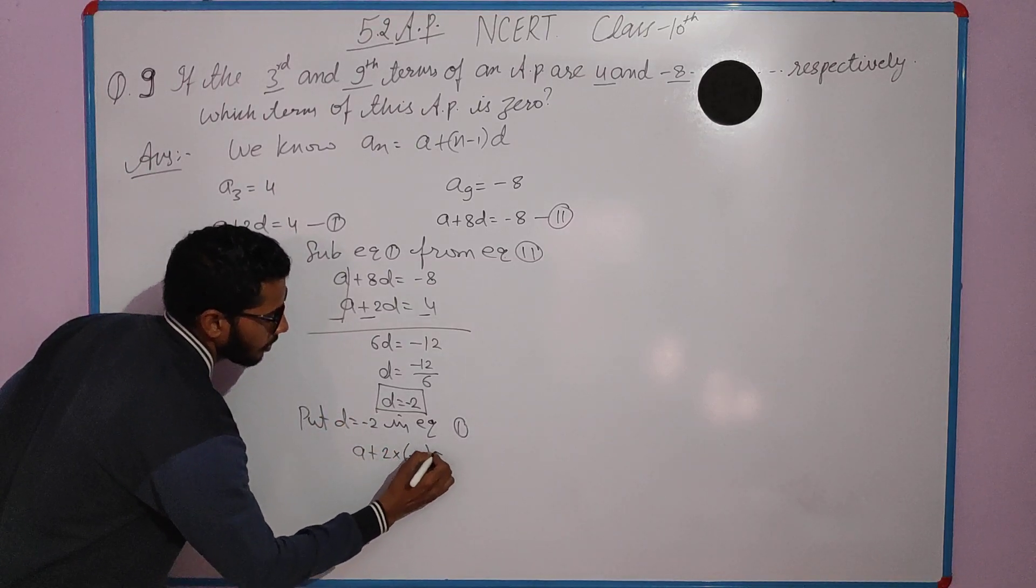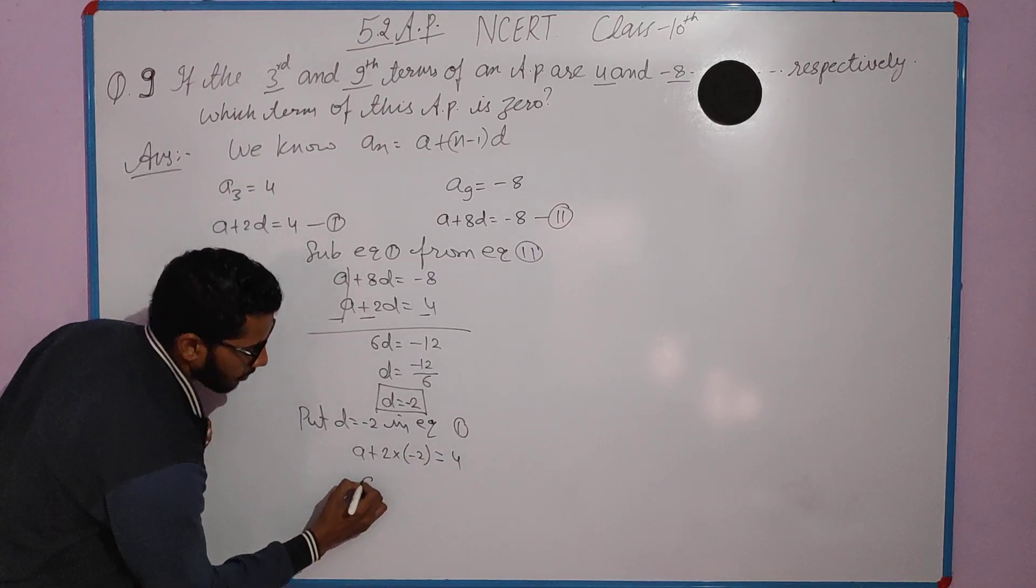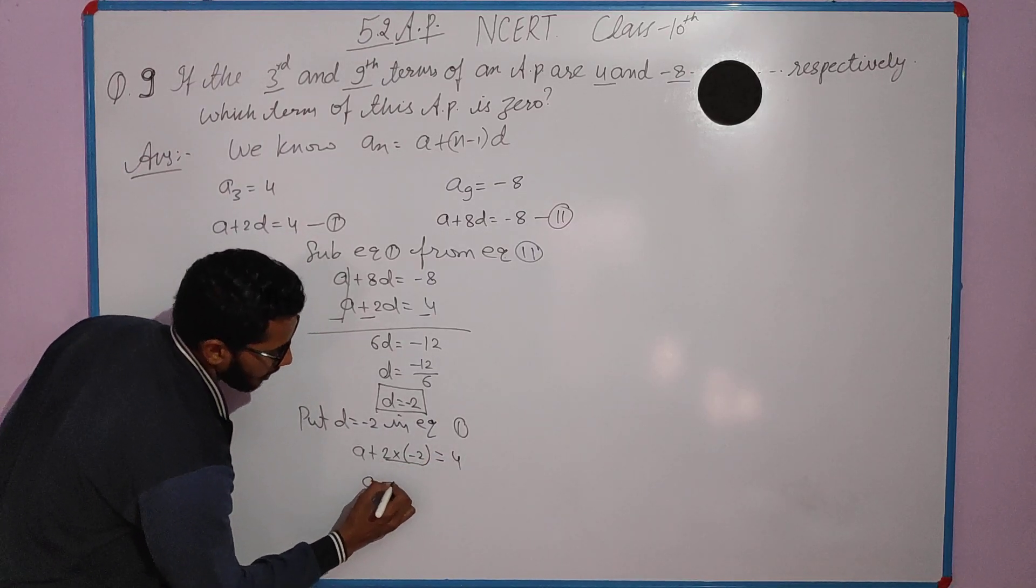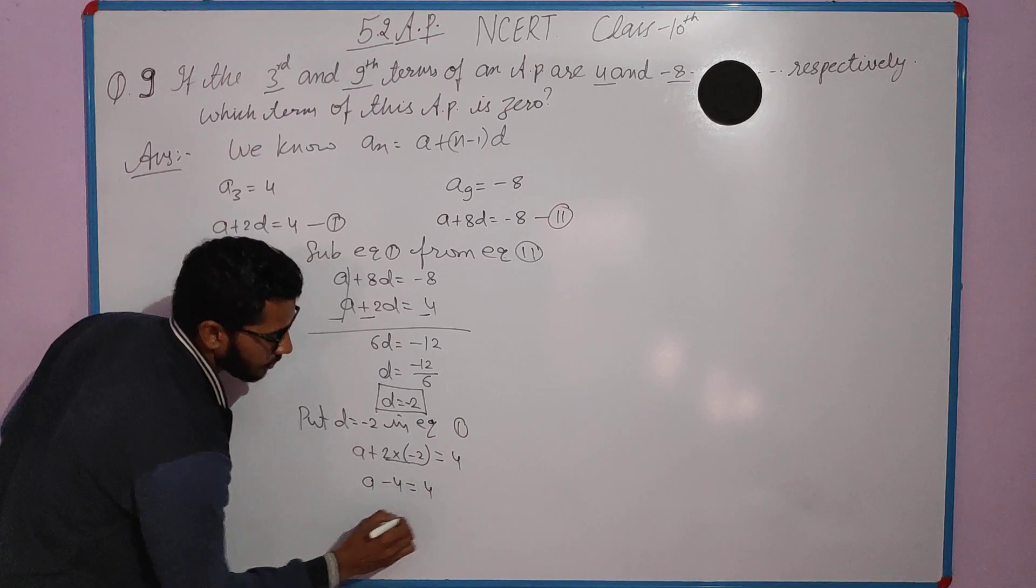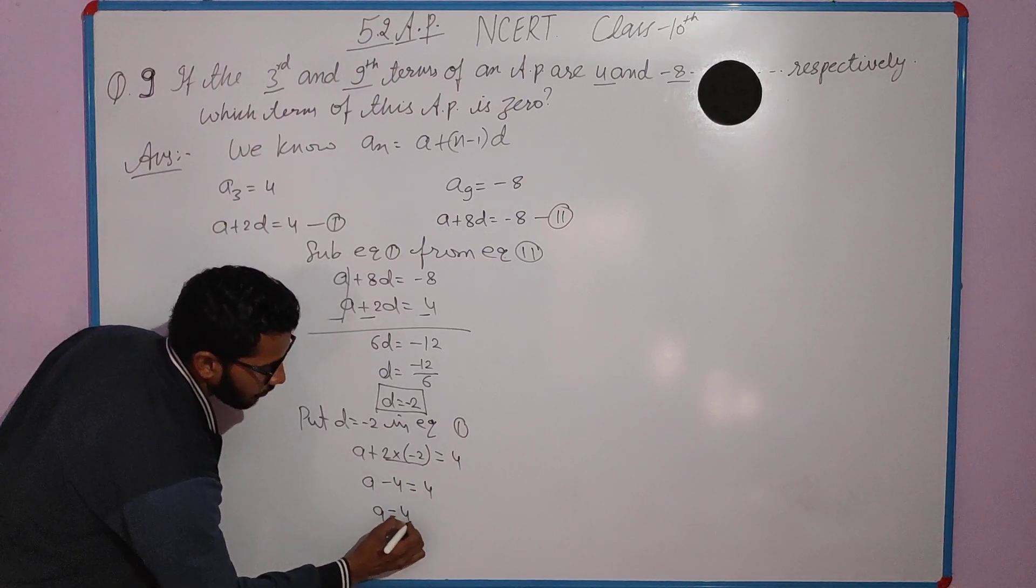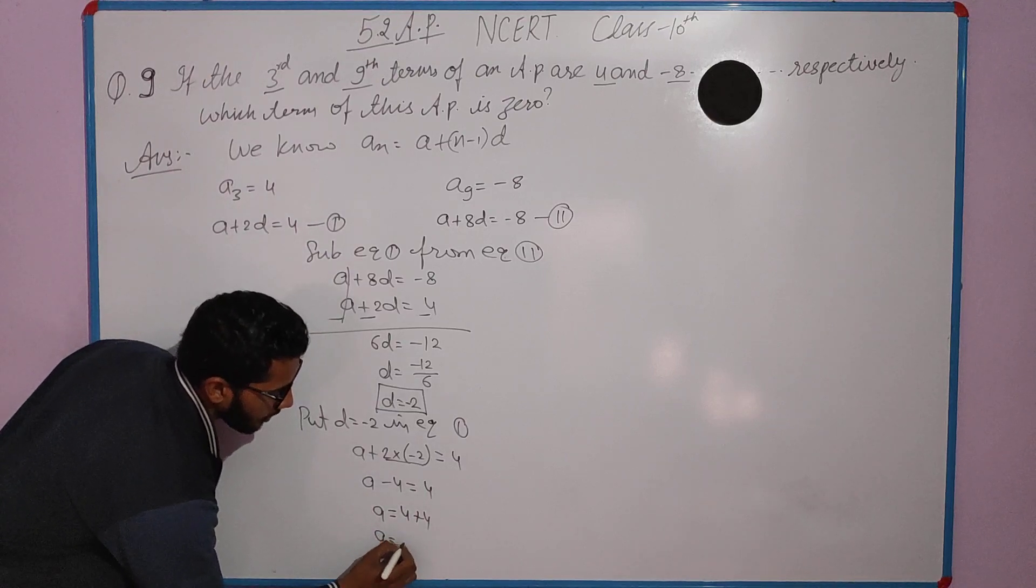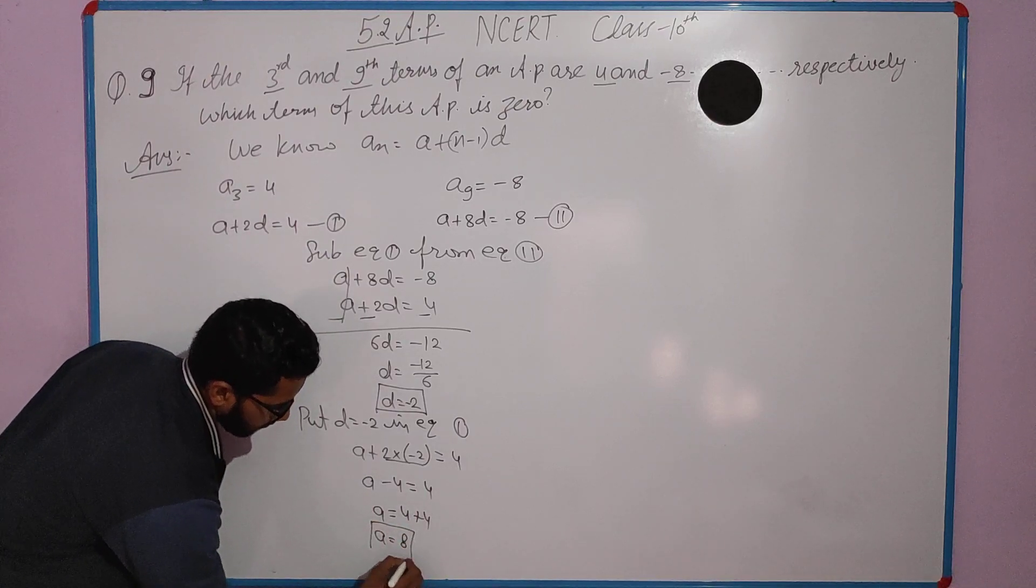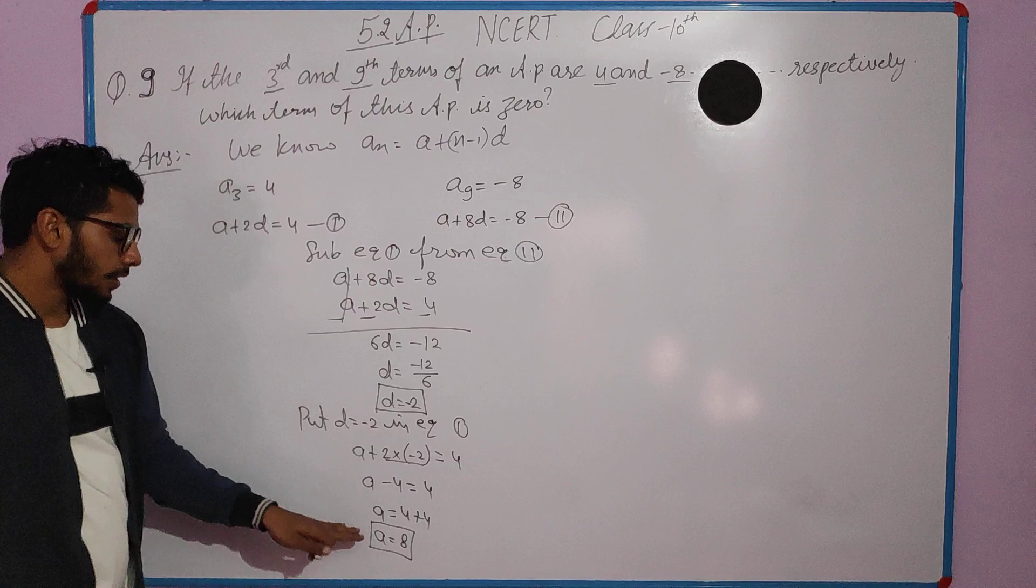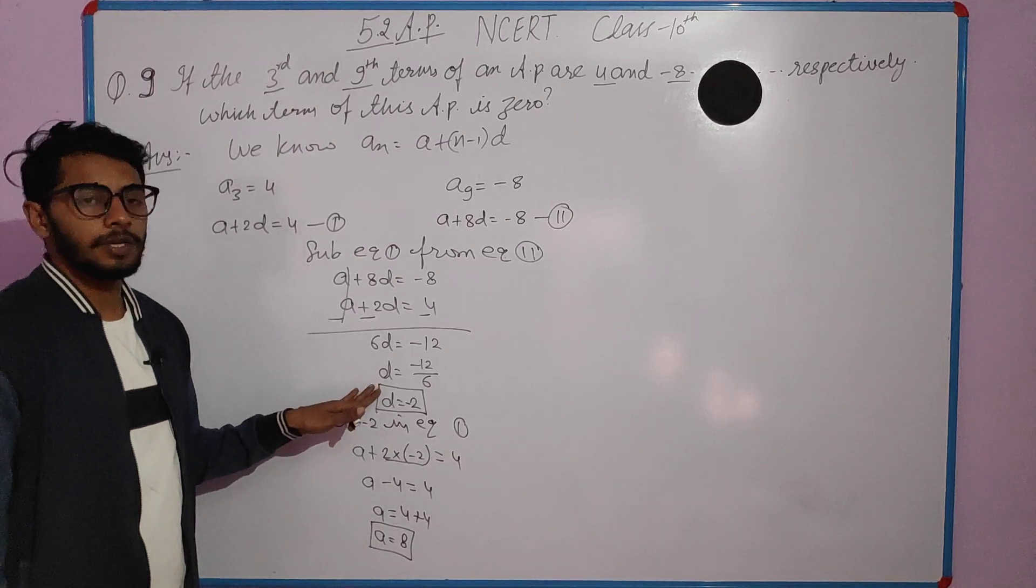Now to find a, I'll substitute d equals minus 2 into equation first. a plus 2 into minus 2 equals 4, so a minus 4 equals 4, which gives a equals 8. So we have the value of a and the value of d.